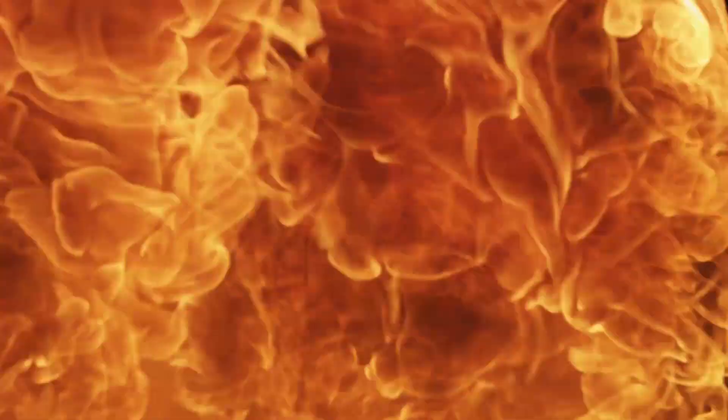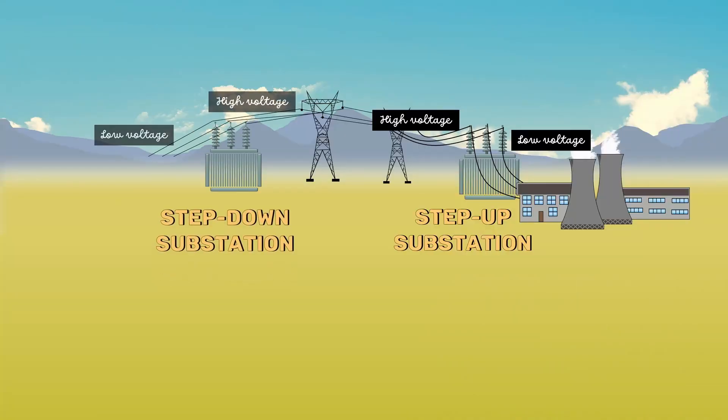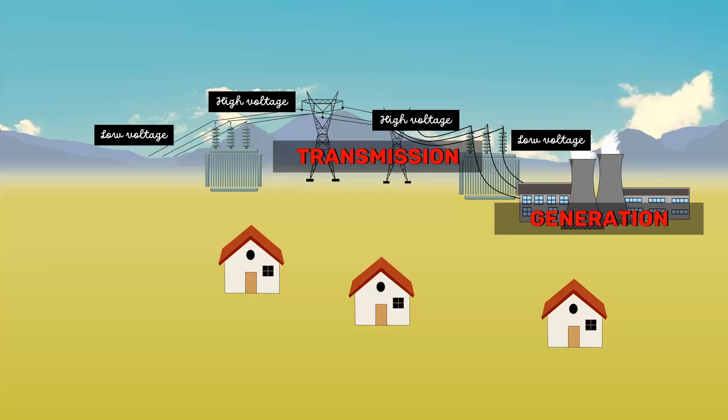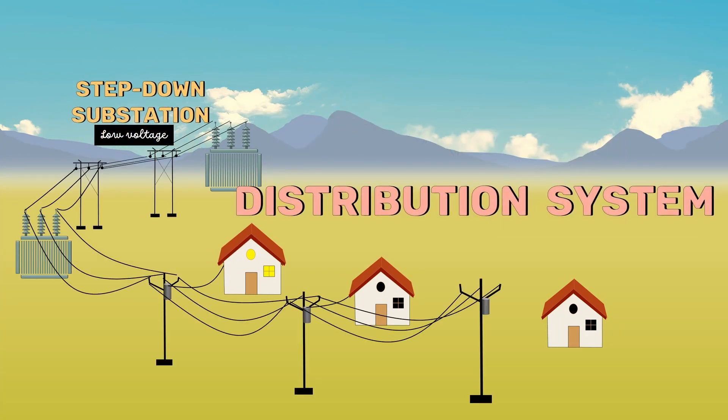As a consumer, we cannot use this high-voltage electricity. All our electrical devices may even burst into flames if an overvoltage is delivered to our circuit. That's why, before delivering it to the consumers, the power is transmitted to the step-down substation. In general, the AC distribution system is the electrical system between the step-down substation and the consumer's meter.